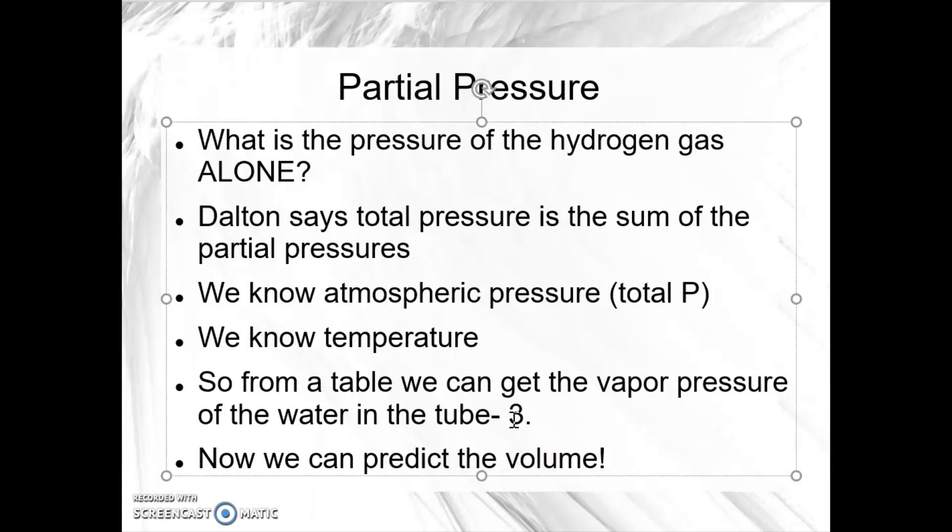Well, the good news is we know the temperature. So from a table, we can get the vapor pressure of water in the tube. And I looked this up at 25 degrees. The vapor pressure of water is 3.17 kPa. So the total pressure will be the atmospheric pressure in the room.